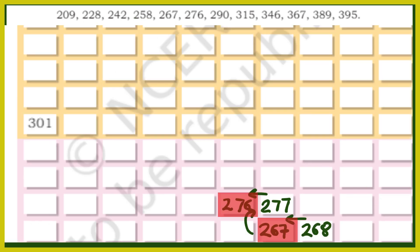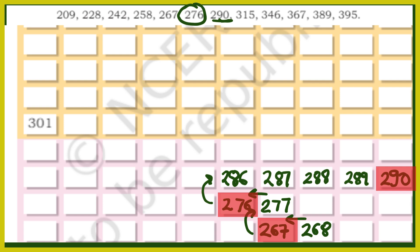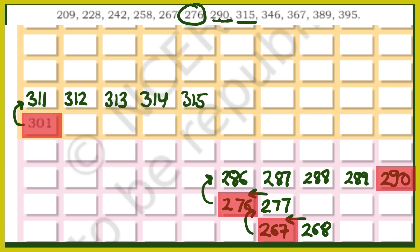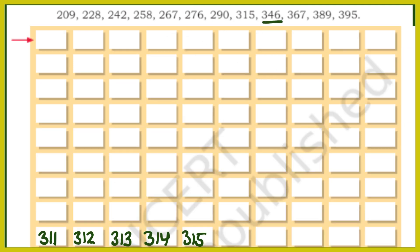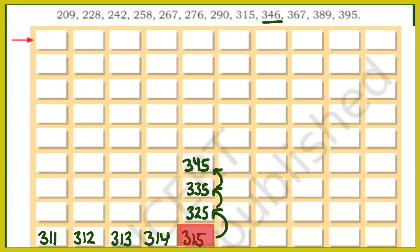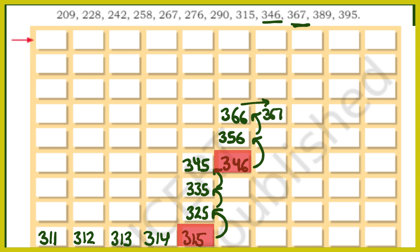अगला है 290. 276 तक हमने देख लिया. 76 के just उपर 286, फिर counting complete करो: 287, 288, 289 and 290. इस वाले floor में deliver करेंगे. फिर 315 पता करना है. 301 यहां है, उसके उपर 311, फिर 312, 313, 314 and 315. तो 315 यहां आ गया. 346 के लिए: 315 के just उपर 325, then 335, then 345, और एक side में 346. अब 367 — 346 के just उपर 356, फिर 366, और एक right में 367. इस वाले room में deliver करेंगे.